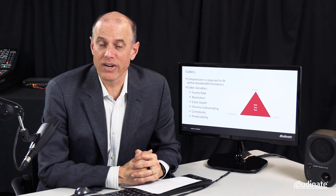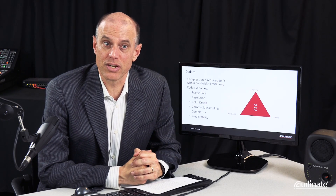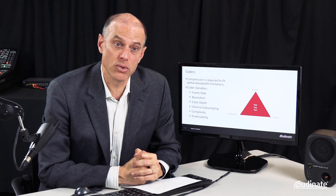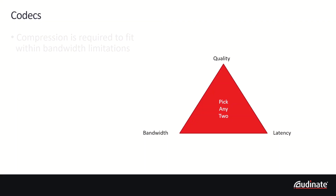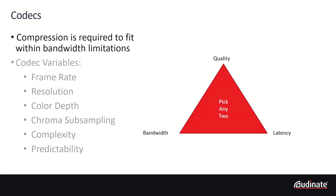Compression technology makes use of various variables such as frame rate, resolution, color depth, and chroma sampling. Compression is subject to complexity trade-offs, seeking to optimize some qualities at the expense of others. For instance, one may optimize for quality and latency, which may cause the bandwidth required to increase.